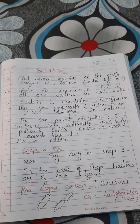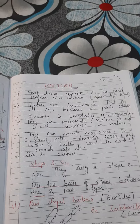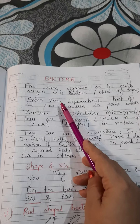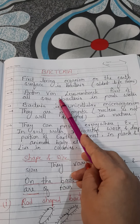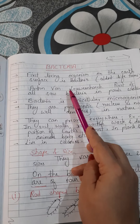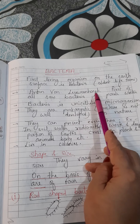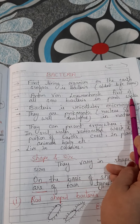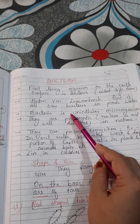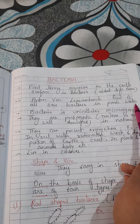Bacteria originates from archaea. The person who first observed bacteria was Anton von Leeuwenhoek, who saw bacteria while doing some experiments with pond water.